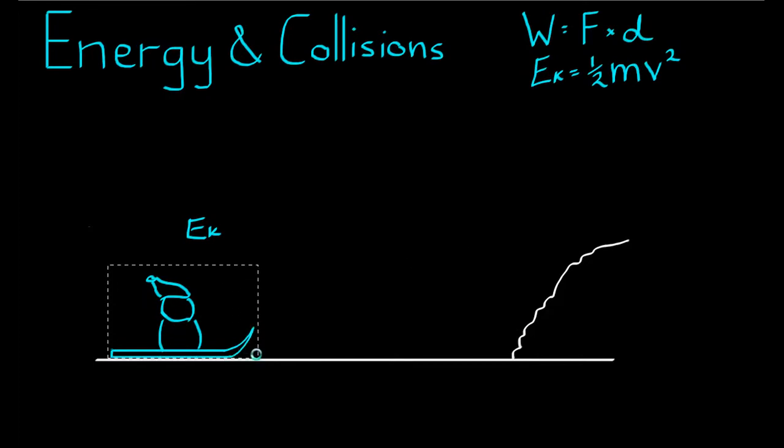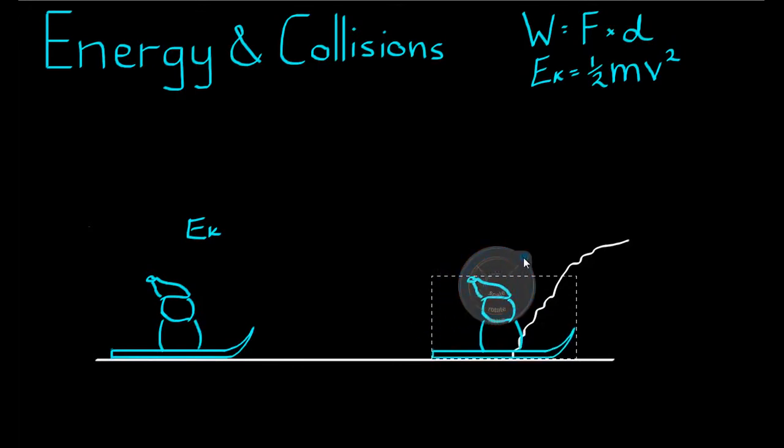If the sled is now in the snowbank, a force has been applied in that direction there. We'll actually draw it from there. So a force has been applied there, and that force works to take the kinetic energy out of the sled.